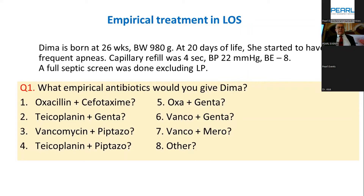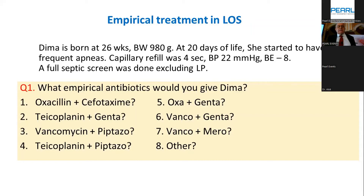We're talking empirical treatment now. I would not choose option 1 because she is an extremely low birth weight infant in shock — I would cover with vancomycin rather than oxacillin initially, and cefotaxime is not a good choice for late onset sepsis in shock. Empirical cefotaxime brings enterococcus, fungal infection, and higher mortality. Options 2, 3, 4: no, because we didn't exclude meningitis. Teicoplanin equals vancomycin but doesn't cross the blood-brain barrier, so no place for option 2.